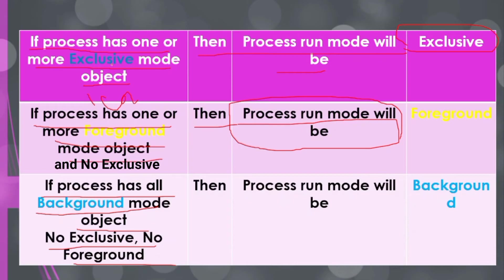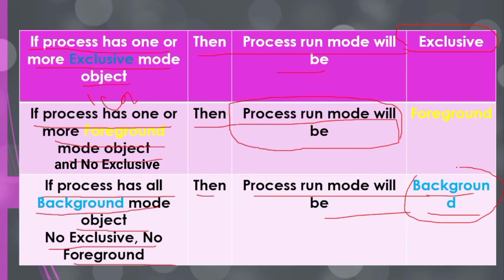If our process is in background run mode, we can run multiple sessions on the same resource. However, it also depends upon the Blue Prism license you purchased — how many resources and how many processes you can run. But if you have access to run multiple sessions on the same resource, you can run multiple sessions of a background process simultaneously, and also one foreground process alongside those background run modes.